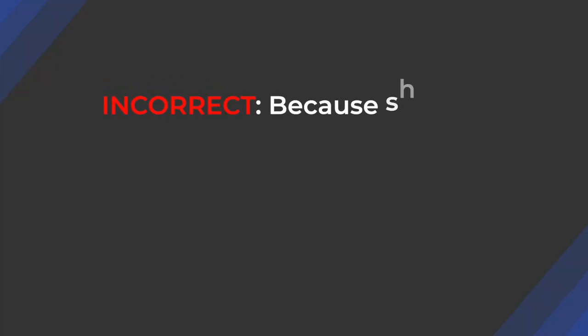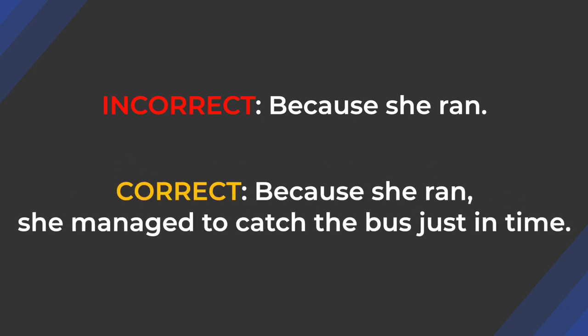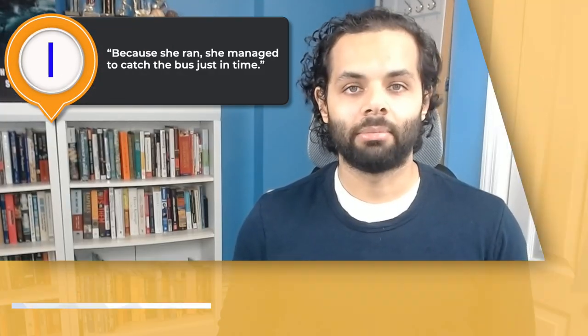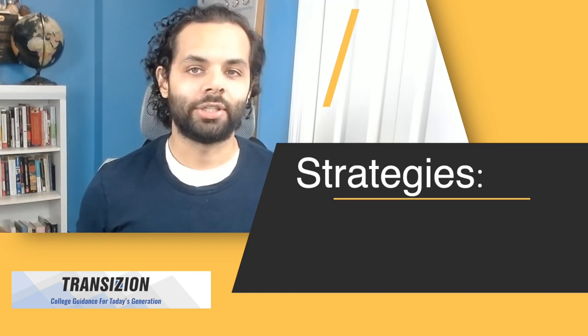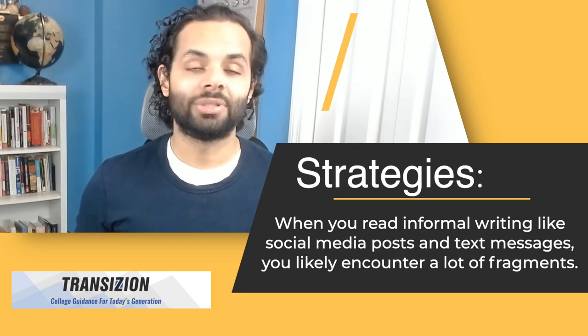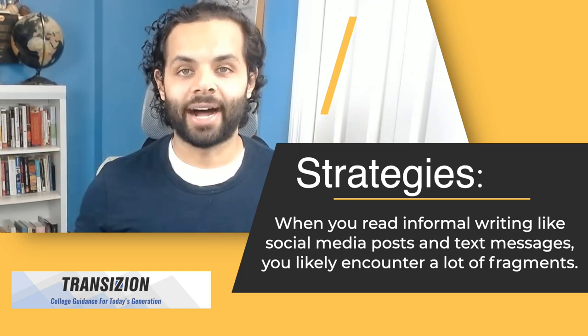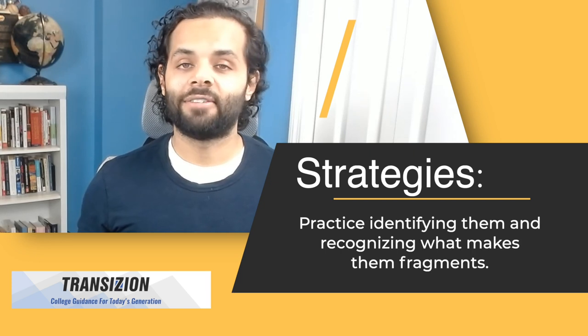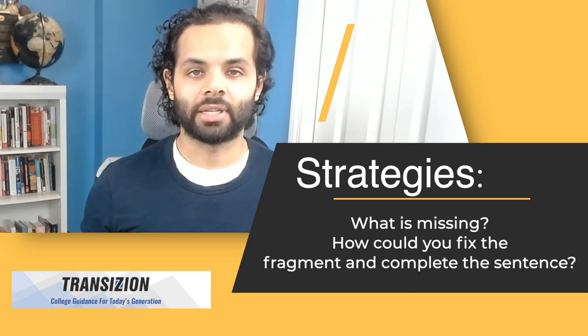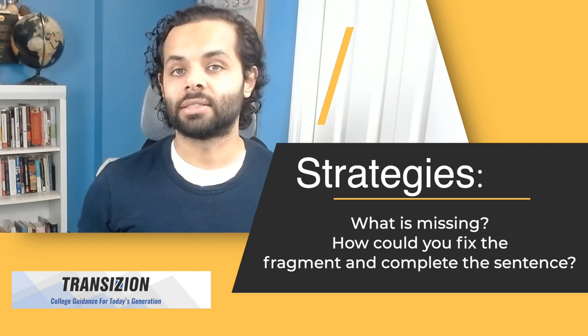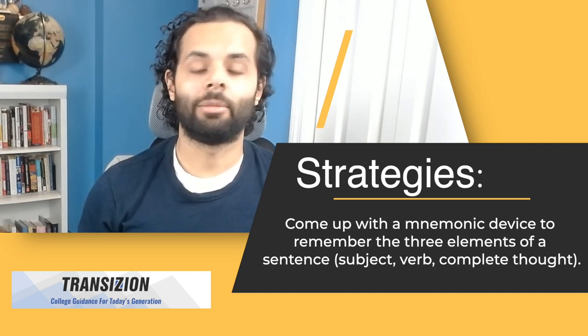Here's an example: the incorrect example is a fragment. Although it does contain a subject and a verb, it does not offer a complete thought. To fix the fragment, we complete the thought — for example: 'Because she ran, she managed to catch the bus in time.' When you read informal writing like social media posts and text messages, practice identifying fragments. Ask what is missing and how you could fix it. Come up with a mnemonic device to remember the three elements of a sentence: subject, verb, and complete thought.